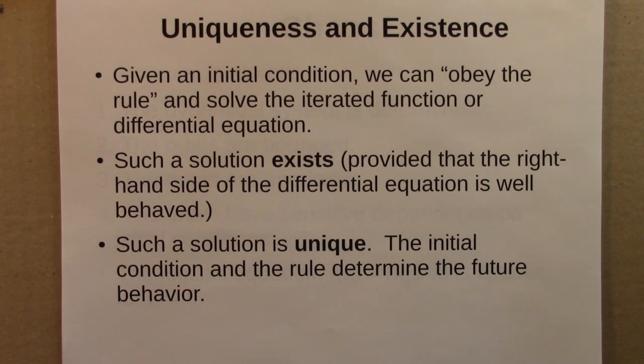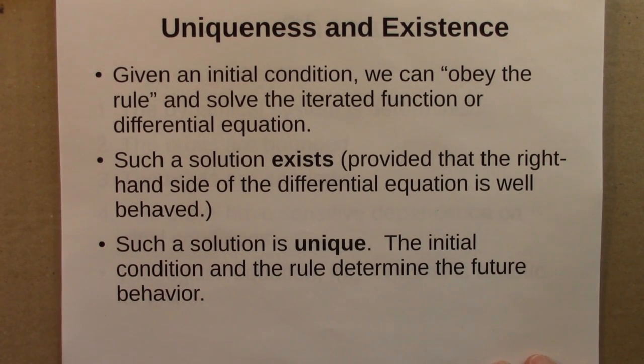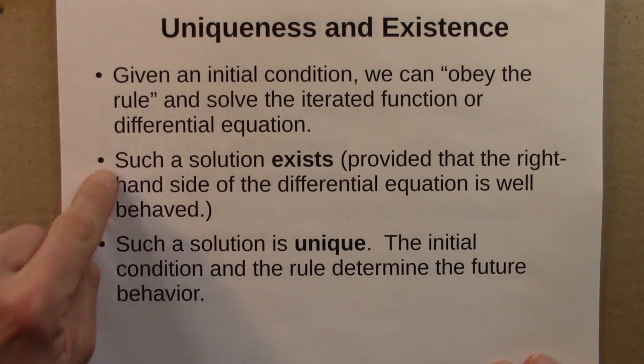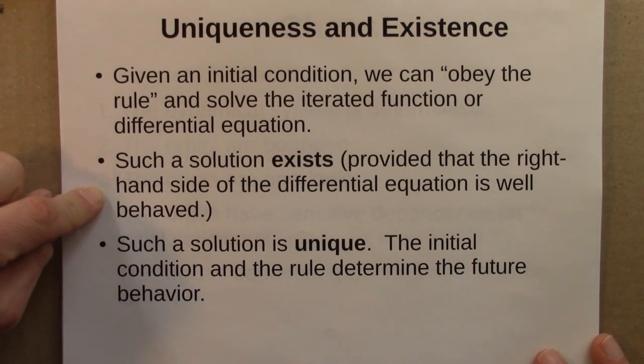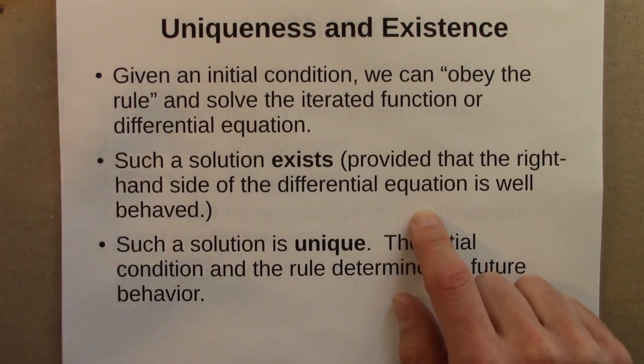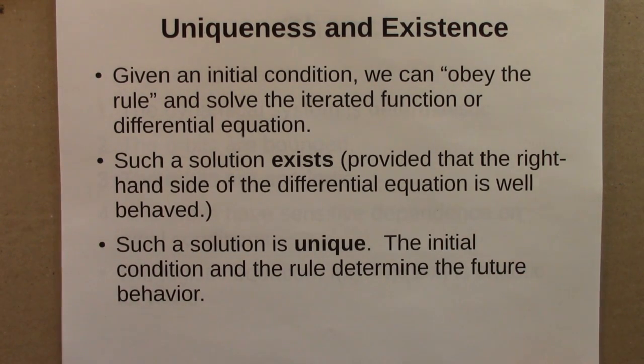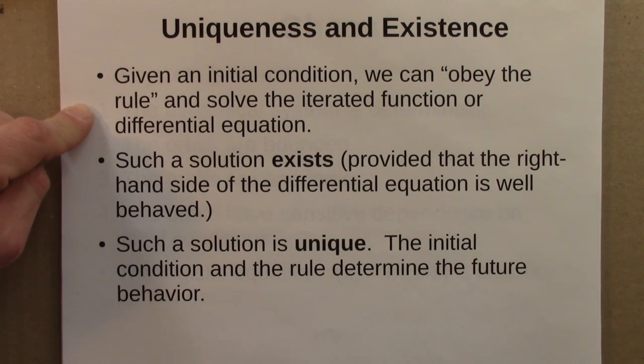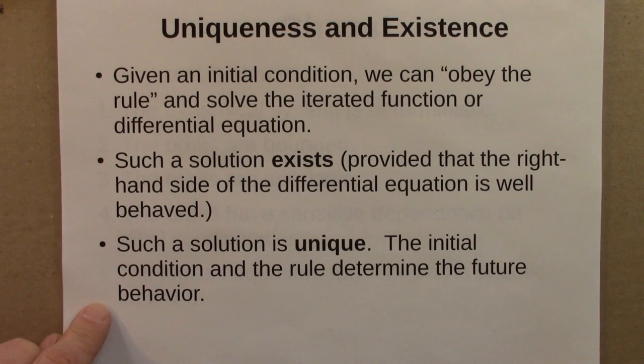I should say a little bit about these important ideas of uniqueness and existence. For both iterated functions and the differential equations we've studied, the key thing is that given an initial condition and given the rule, we just obey the rule and solve the iterated function or differential equation. A solution exists, you would never get stuck and say there is no solution. You just follow the rule again and again. There's some fine print. This provides that the right-hand side of the differential equation is well behaved, so there are no infinities or discontinuities. Moreover, such a solution is unique. If I start with an initial condition and a rule, and somebody on the other side of the planet starts with the same initial condition and the same rule, we'll find the same solution. The initial condition and the rule determine the future behavior.